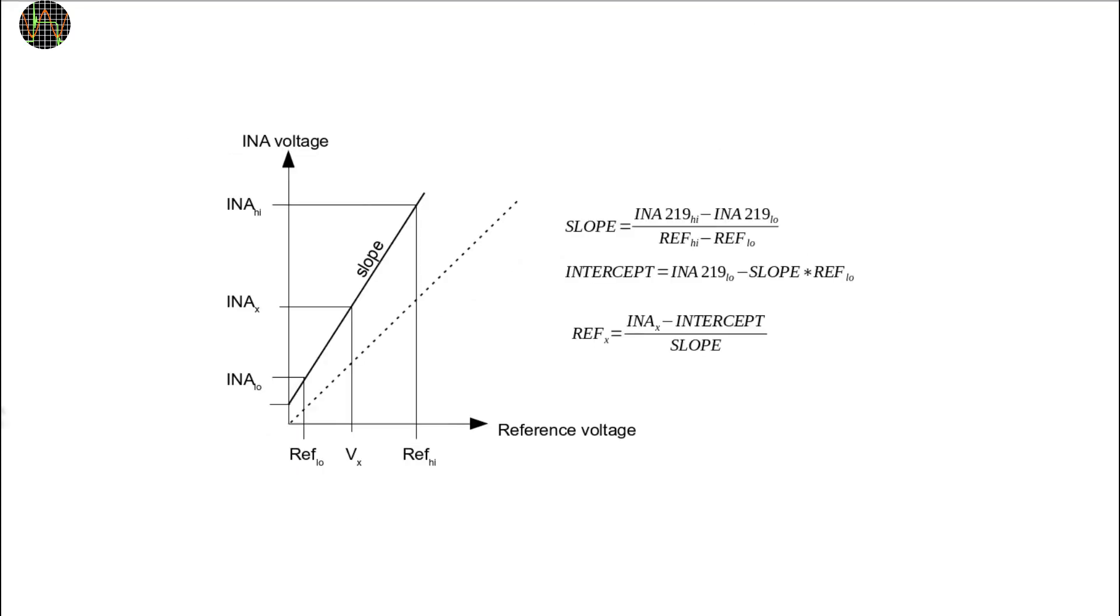Here is a brief recap of that method. We basically take two pairs of measurements, one on the INA219 chip in the Powermon and one by a reference DMM. One pair is for the low side of the range and one pair covers the high side.